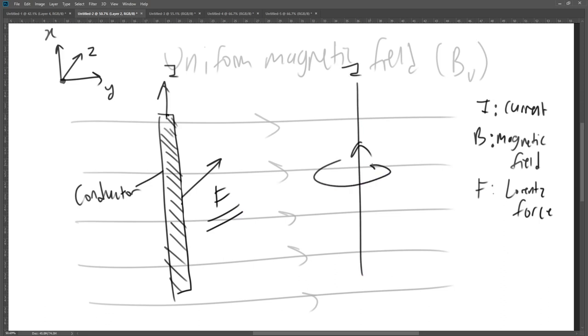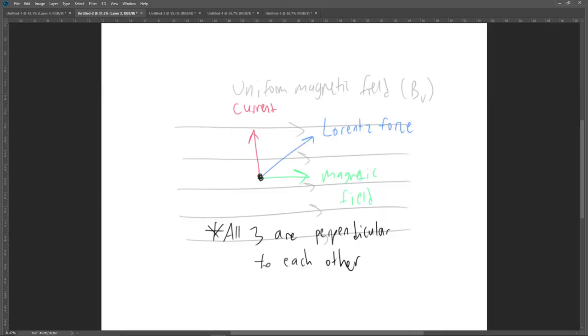This force occurs because the current itself generates a magnetic field that interacts with the external magnetic field, creating regions where the magnetic field is stronger and regions where it's weaker. This results in a force that acts on the conductor from the stronger to the weaker field. The direction of this force can be determined with Fleming's left-hand rule.